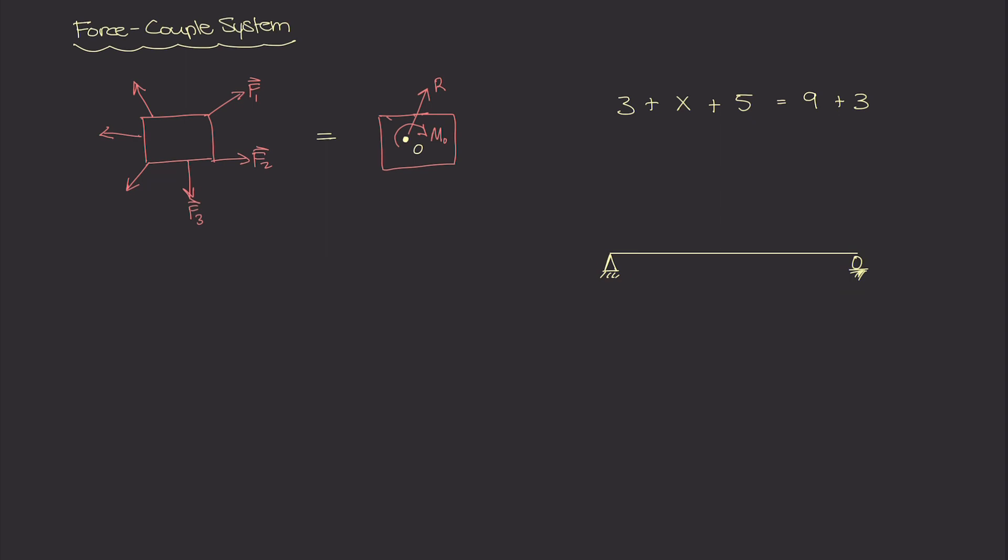Now, imagine at some point on this beam, you have a force that's acting downwards. And I'll just say that is F. Now, if you wanted to move this force F to another location on this beam, so you can move it over here or over here or even over here, what you really are doing is you're doing this equation, but in terms of engineering. So I know that sounds confusing. Let me explain visually.